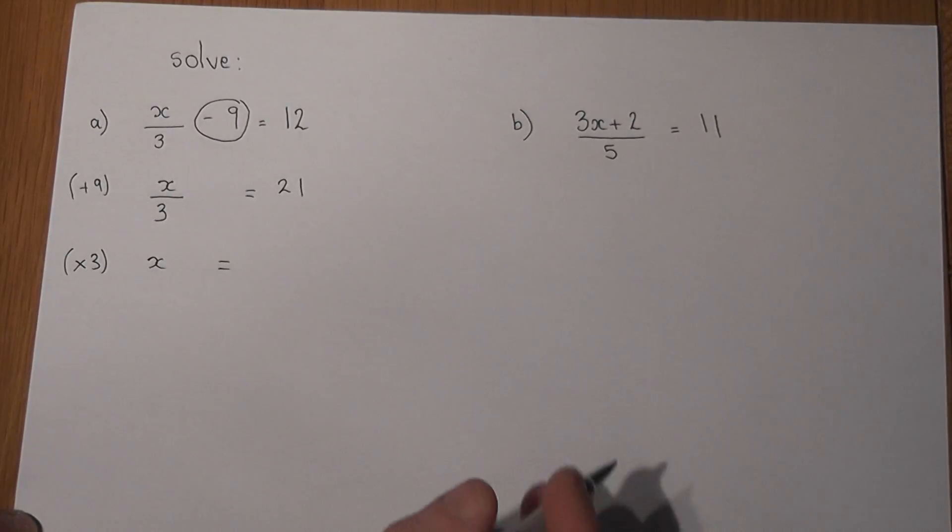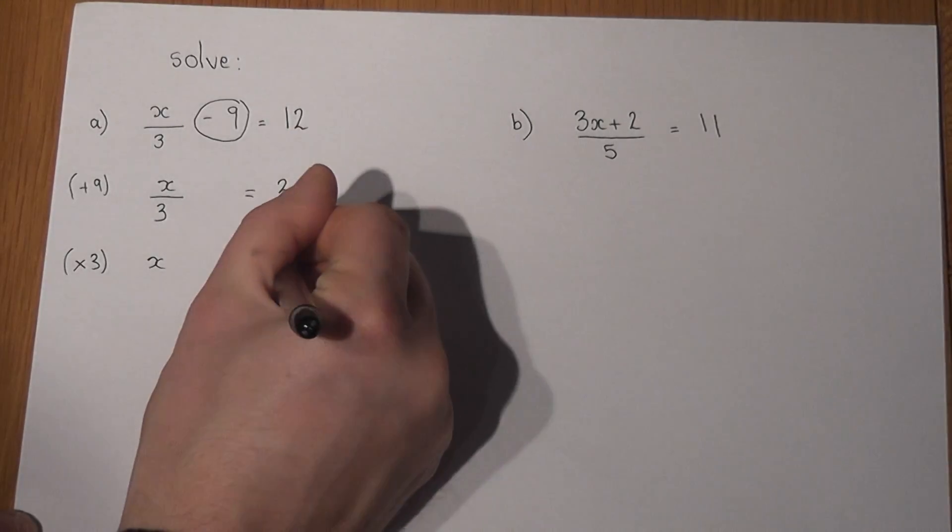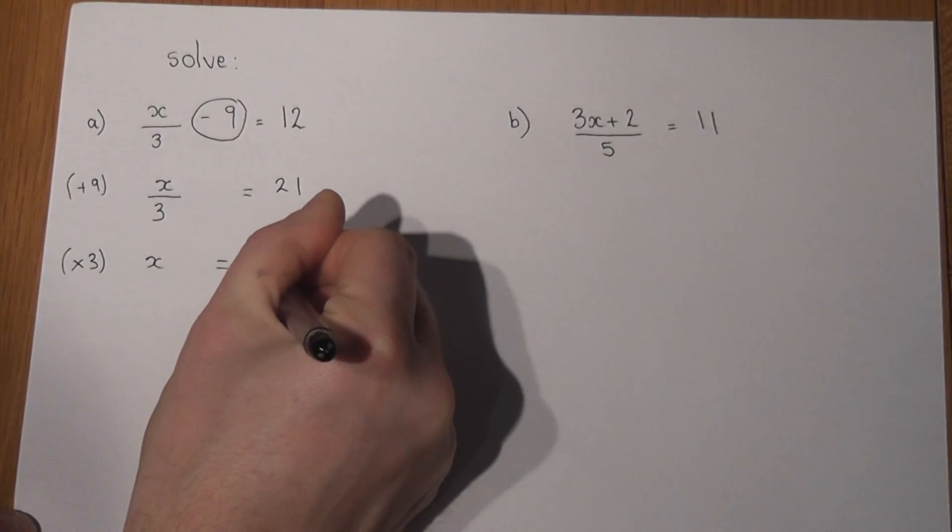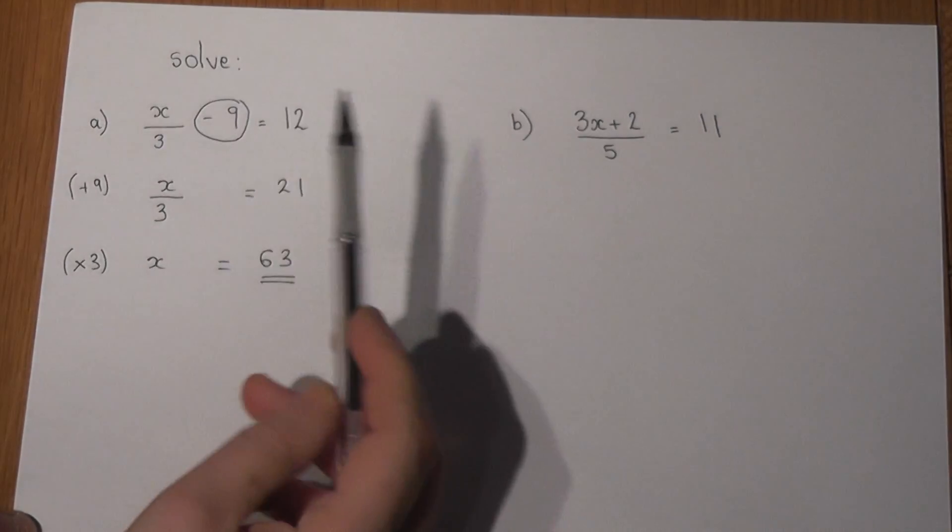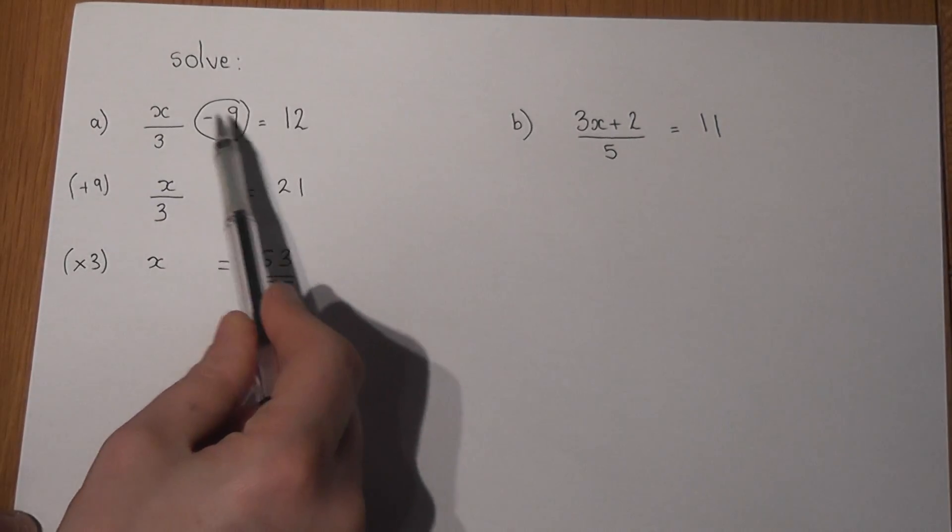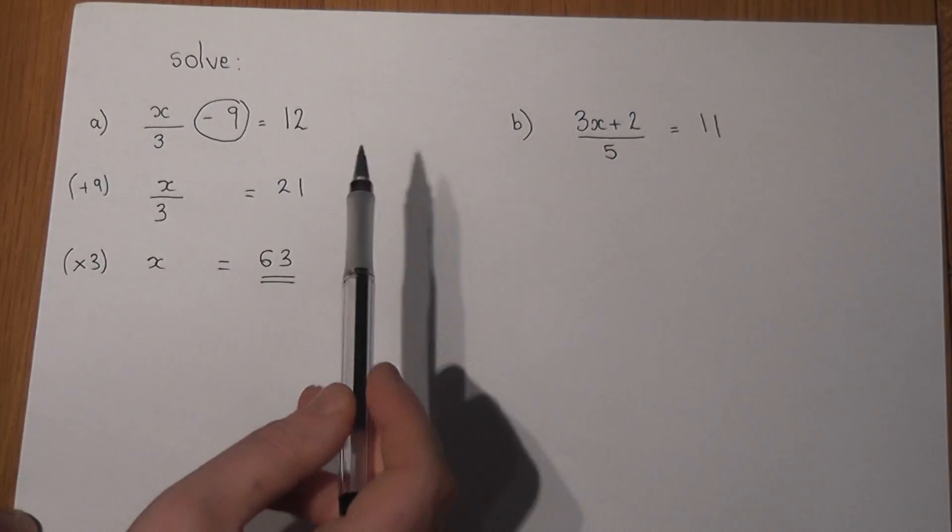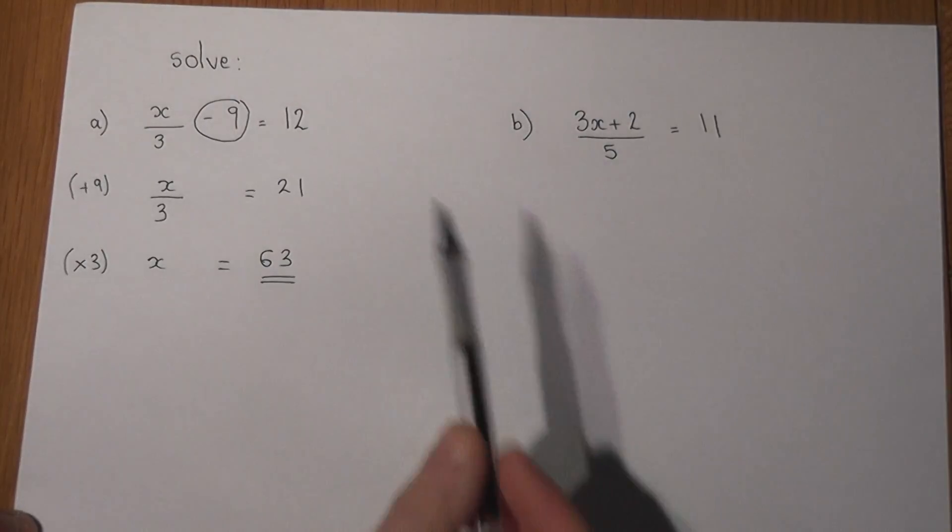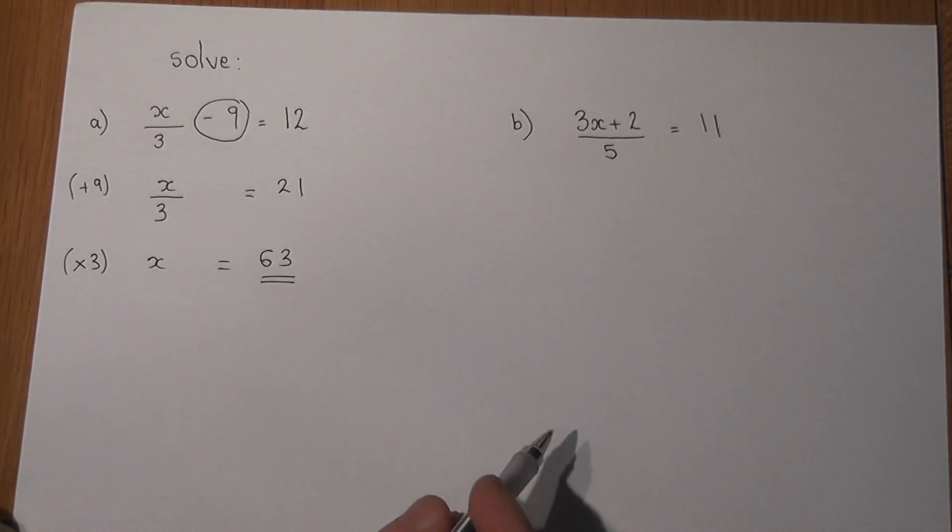...we end up with x equal to 63. So again, my advice: if we've got a fraction minus an integer, we deal with the integer first and then times by the 3 afterwards to get the solution to the equation.